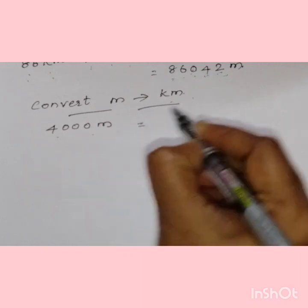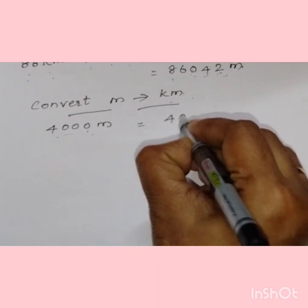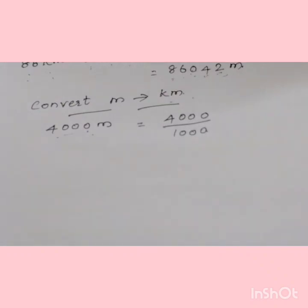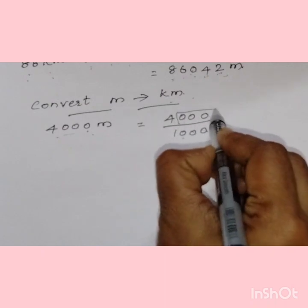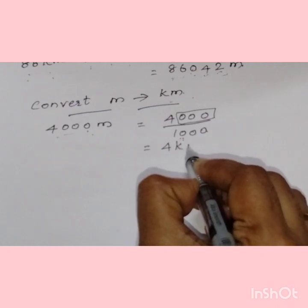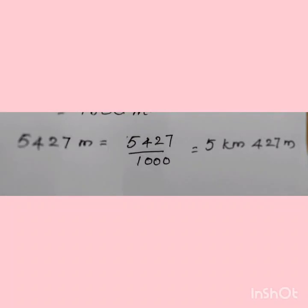Now converting meters to kilometers — from small unit to big unit — so we divide by 1000. 1 meter equals 1/1000 kilometer. For 4000 meters, we cancel three zeros: it becomes 4 kilometers. For 5,427 meters, dividing by 1000 gives 5 kilometers with the remaining three digits — 427 — as the remainder in meters.